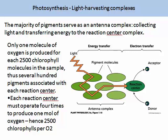In the light harvesting complex, the majority of pigments serve as an antenna complex, collecting light and transferring energy to the reaction centre complex. To understand this process, it is important to know that only one molecule of oxygen is produced for each 2,500 chlorophyll molecules in the same sample. Thus, several hundred pigments are associated with each reaction centre. Each reaction centre must operate four times to produce one mole of oxygen. Therefore, in summary: 2,500 chlorophylls per oxygen.